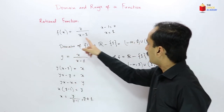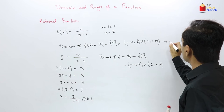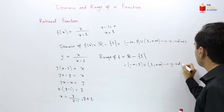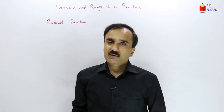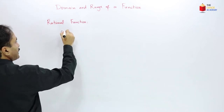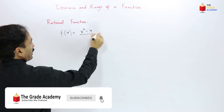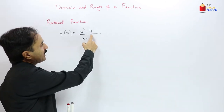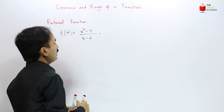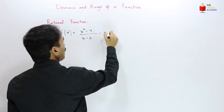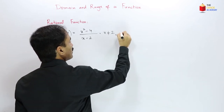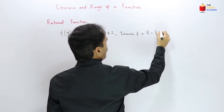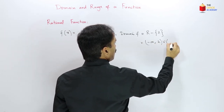Now consider f(x) = (x²−4)/(x−2). For the domain, set x − 2 = 0, giving x = 2. So x cannot equal 2. The domain is all real numbers except 2, written as (−∞, 2) union (2, +∞).